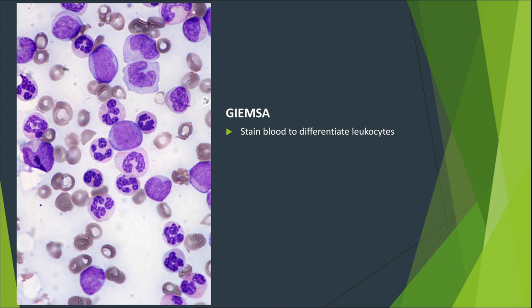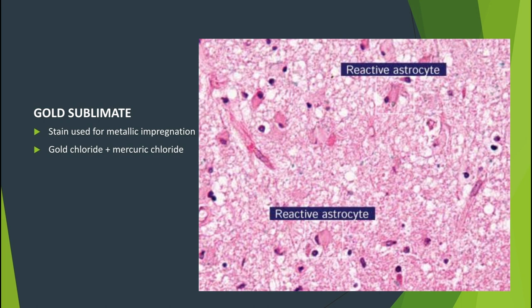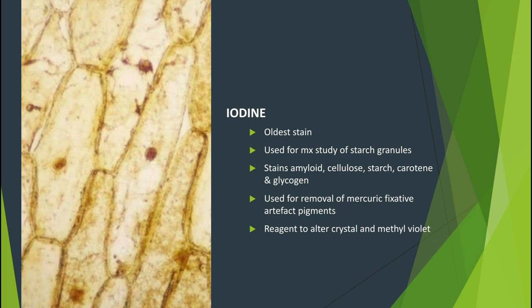Gentian violet is the staining solution formed by the mixture of crystal violet, methyl violet, and dextrin. Giemsa stain is used for staining blood to differentiate leukocytes. Gold supplement is the stain used for metallic impregnation, made up of gold chloride and mercury chloride. Iodine is probably the oldest of all stains, originally used for microscopic study of starch granules. It stains amyloid, cellulose, starch, carotenes, and glycogen. It is widely used for removal of mercury fixative artifact pigments and as a reagent to alter crystal and methyl violet so that they may be retained by certain bacteria and fungi. Examples of iodine include Gram's iodine and Lugol's iodine.